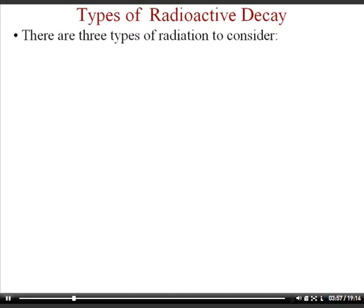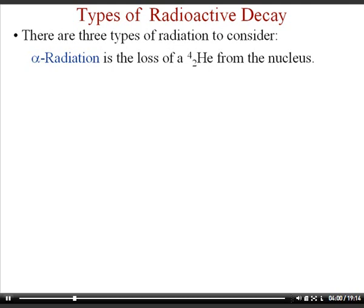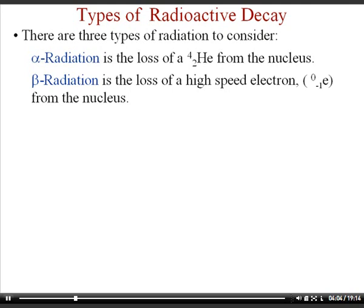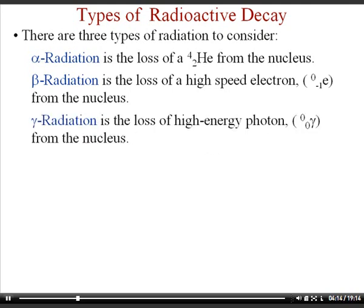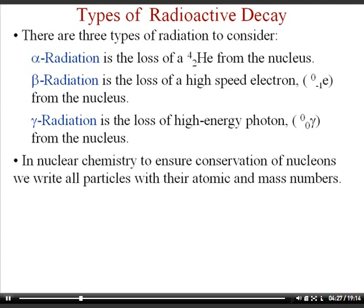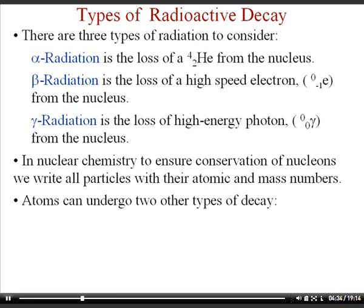There are three main types of radioactive decay. Alpha decay is the loss of a helium nucleus (two protons, two neutrons). Beta decay is the loss of a high-speed electron — the electron has a mass number of zero and a charge of negative one. Gamma radiation is the loss of a high-energy photon; gamma particles have no mass and no charge, so the symbol uses zero, zero. In nuclear chemistry, all particles are written with their atomic number and mass number to ensure conservation of nucleons.